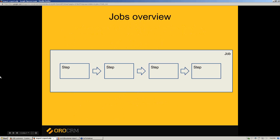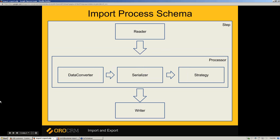The import and export schema is quite simple. Both are managed by a job, and each job contains steps executed one by one. Each step contains three services: Reader gets data from a CSV file. Processor converts data to object representation in an array. Serializer converts the representation into objects. Strategy adds some import logic — for example, validation and ownership management. Strategy is optional.